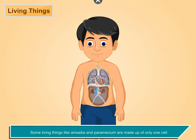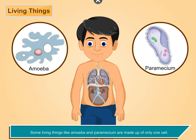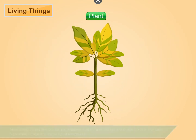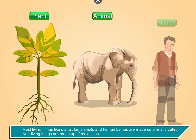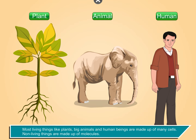Some living things like amoeba and paramecium are made up of only one cell. Most living things like plants, big animals and human beings are made up of many cells. Non-living things are made up of molecules.